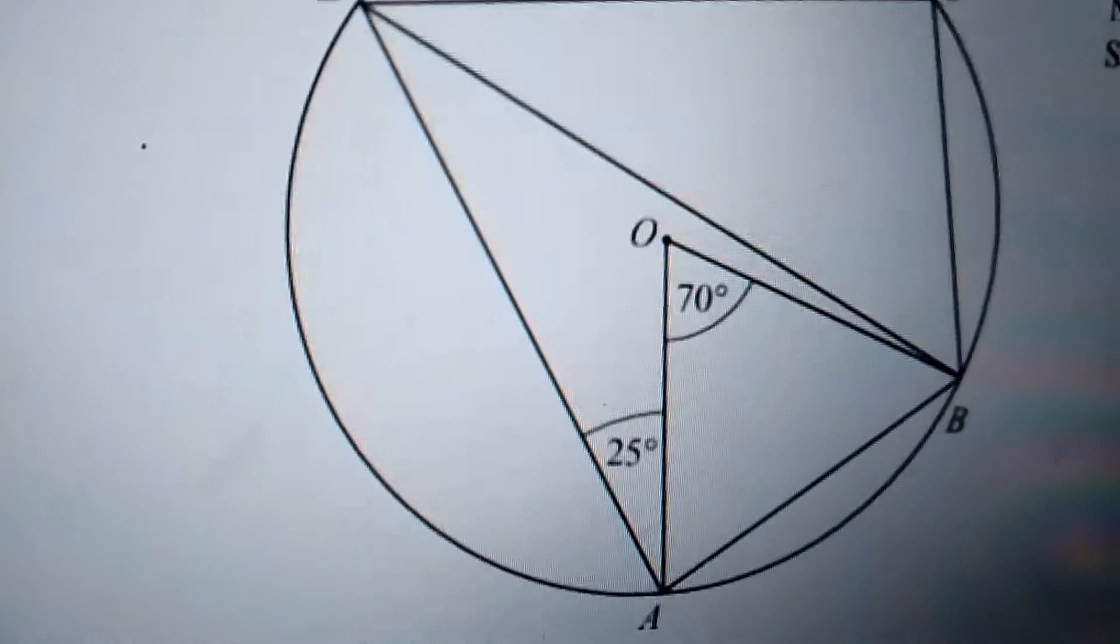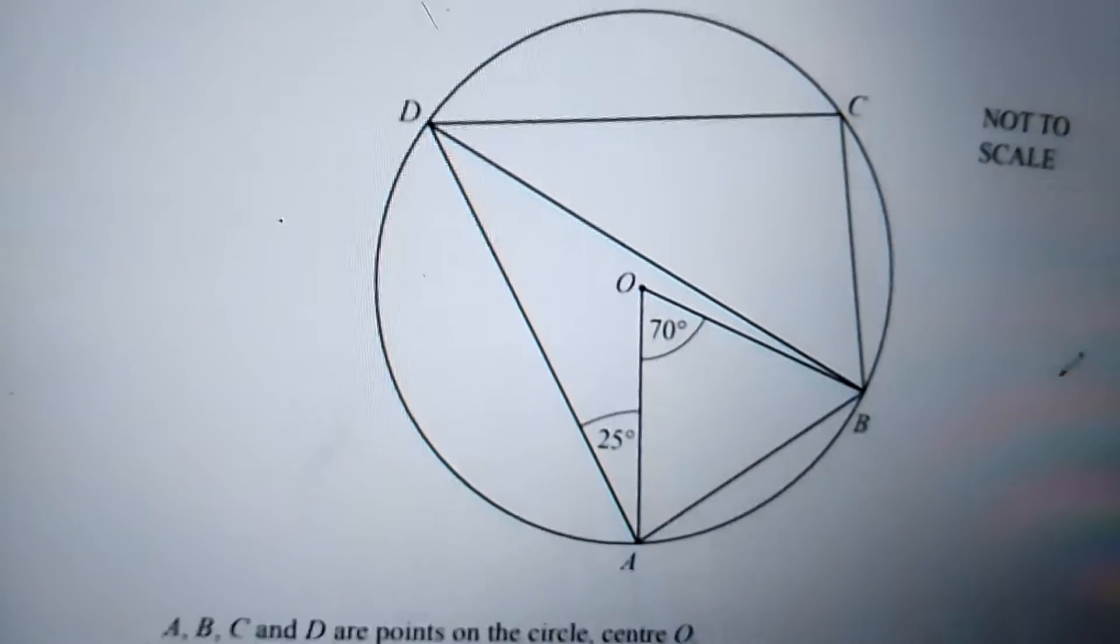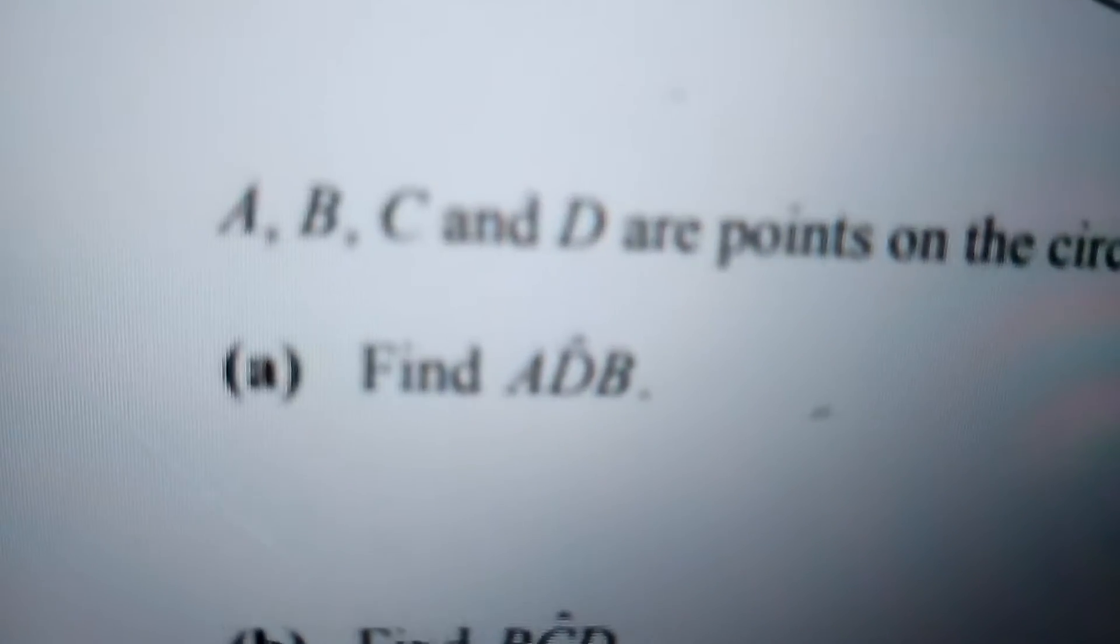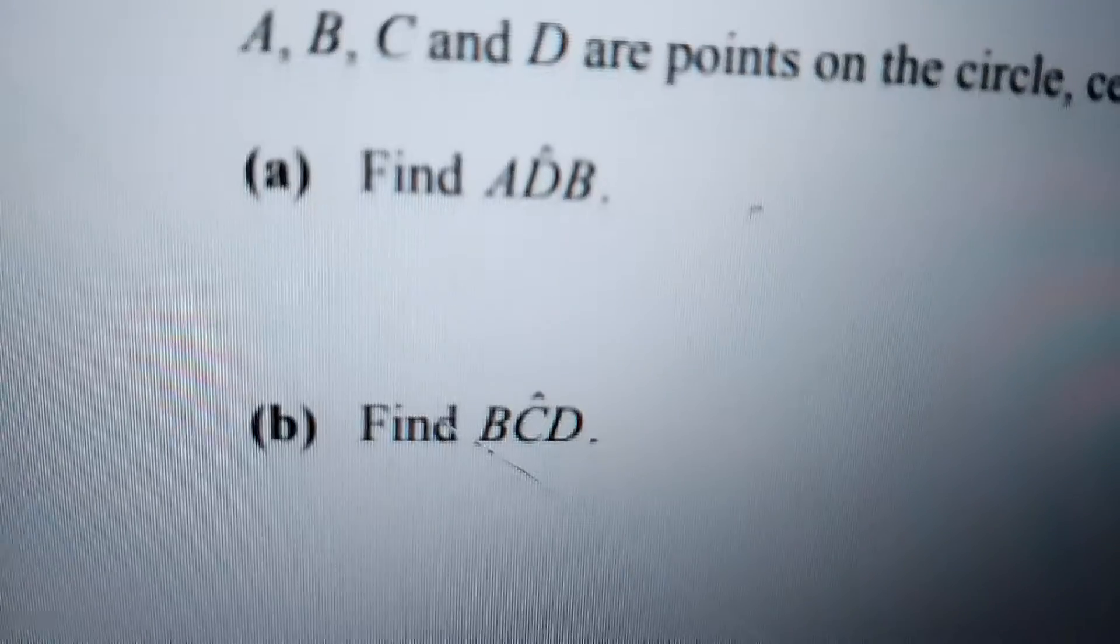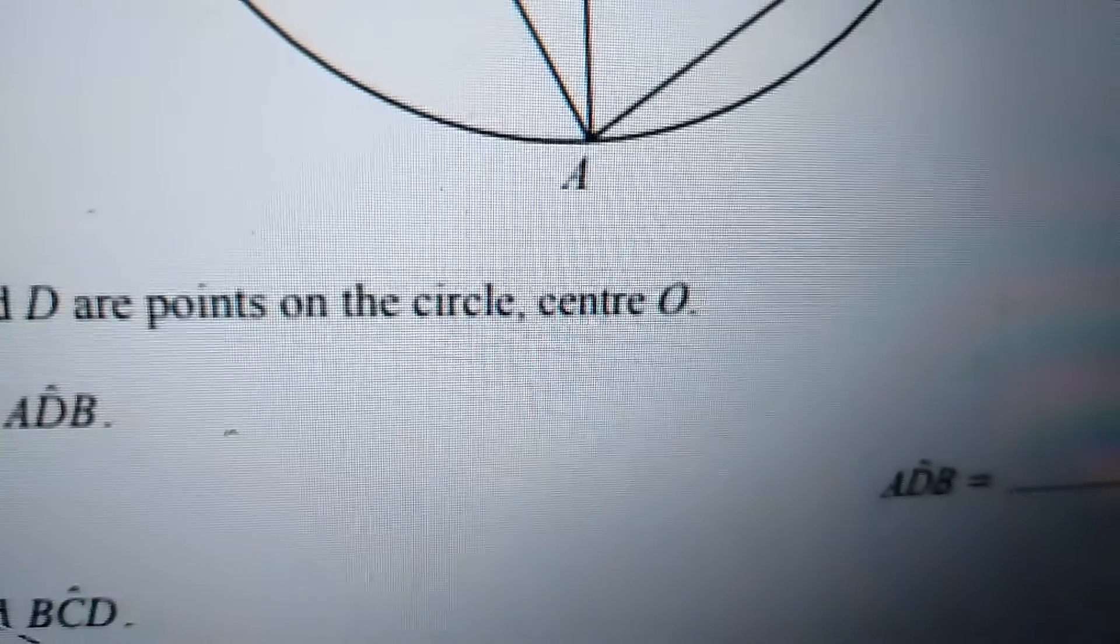Okay friends, today we are looking at angle properties of circle or cycle properties. We have to find out the angle ADB and then the angle BCD. A, B, C and D are the points on the circle.